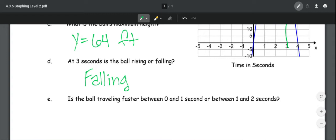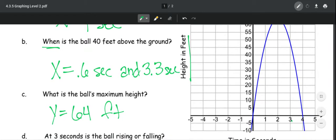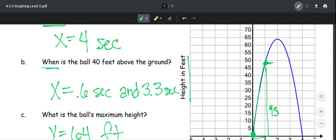Is the ball traveling faster between 0 and 1 seconds or between 1 and 2? So in order to do that, between 0 and 1, so it went from 0 to about 43 feet. So that's 43 feet about. And then from 1 to 2 seconds, it went from here to there. So that means it went from 43